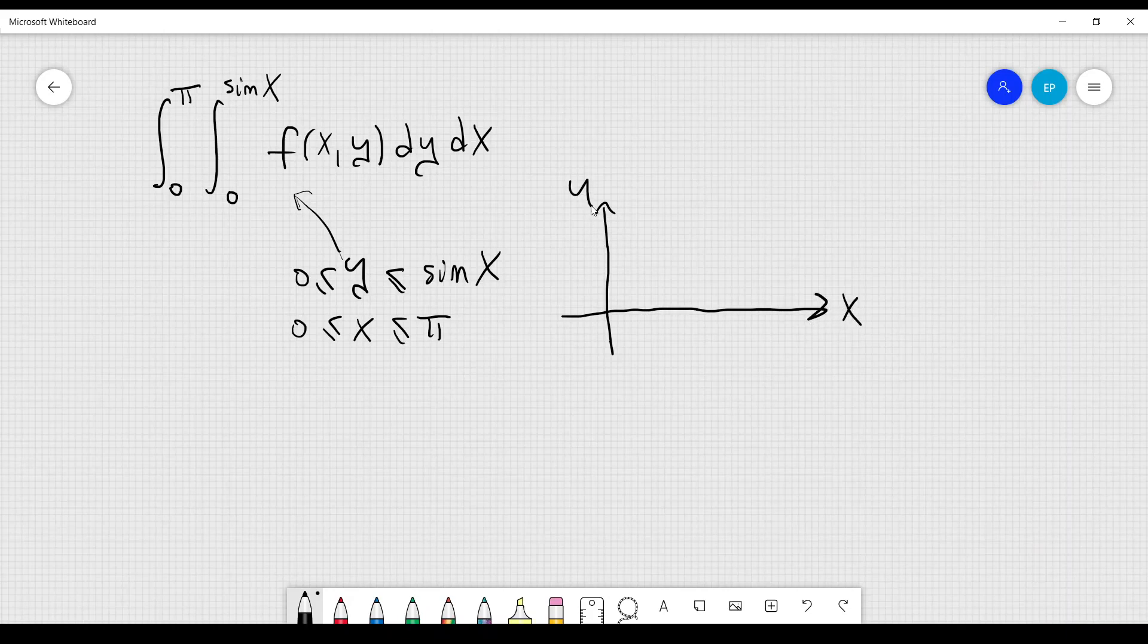Here we have x, here we have y, and here we have just one portion of the sinusoid between 0 and π, and we have to integrate over this area here.